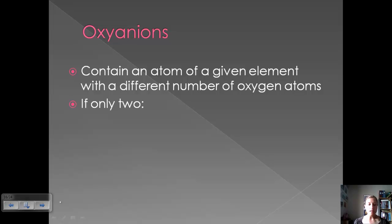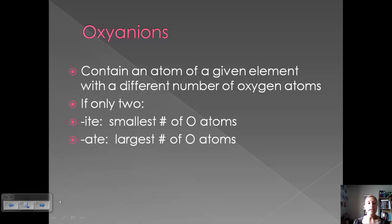So if you have a set of oxyanions that contain a certain element and only two of them exist, then there are ways to name those. The oxyanion with the smallest number of oxygen atoms gets an ITE ending, and then the other oxyanion, the one with the larger number of oxygen atoms, gets an ATE ending.